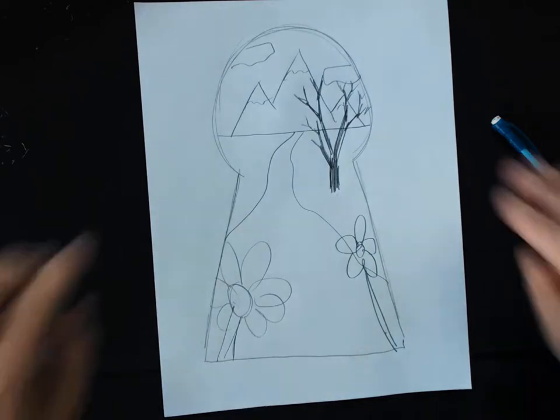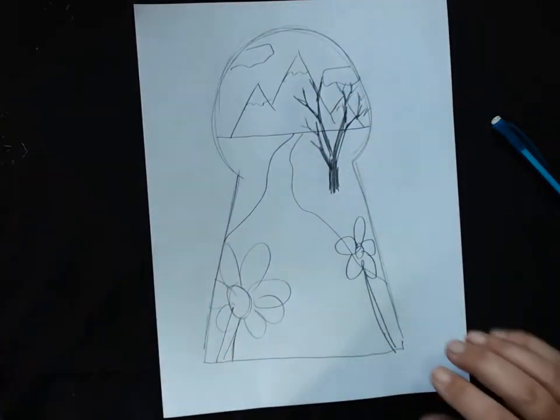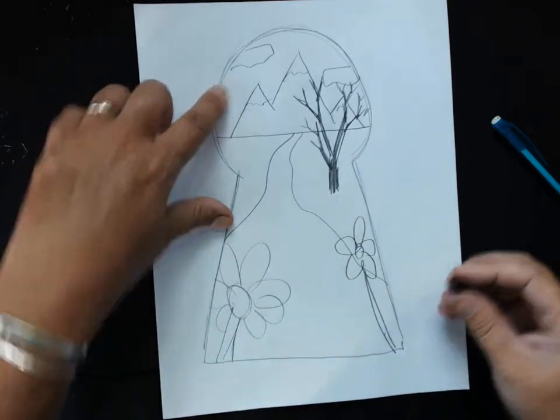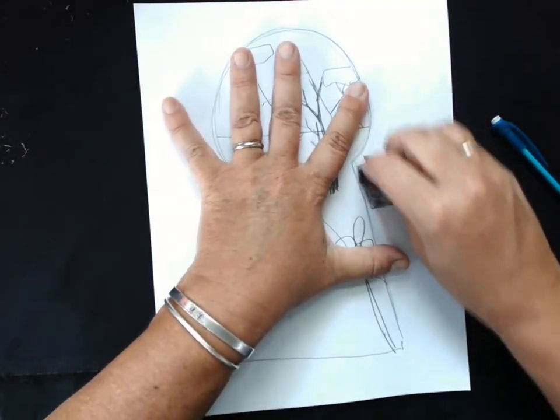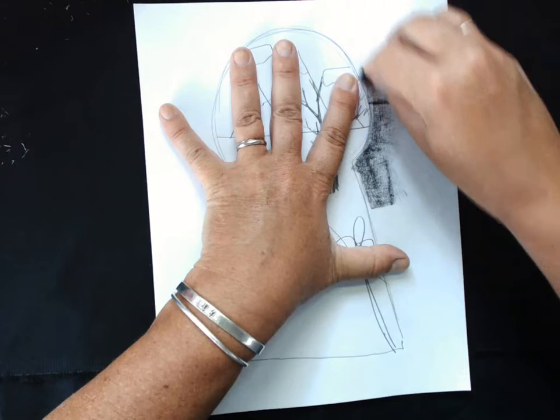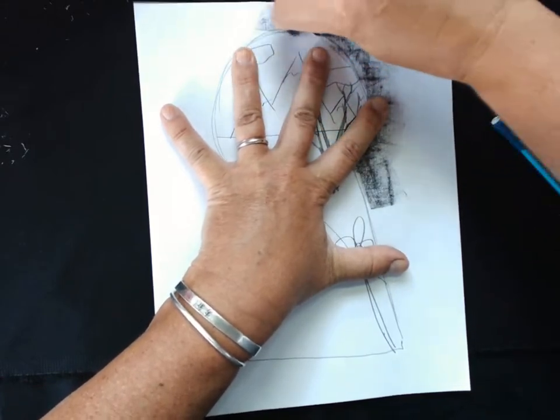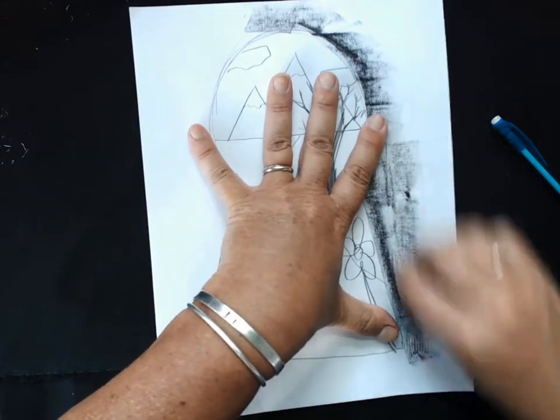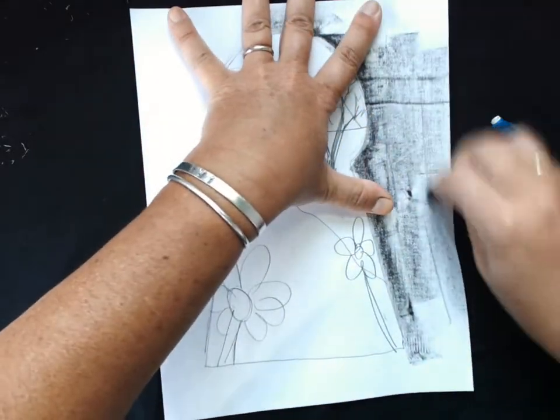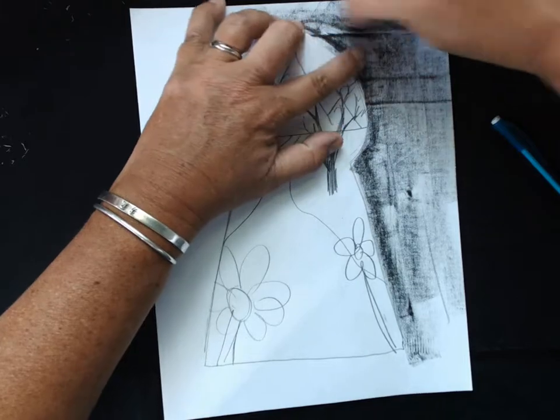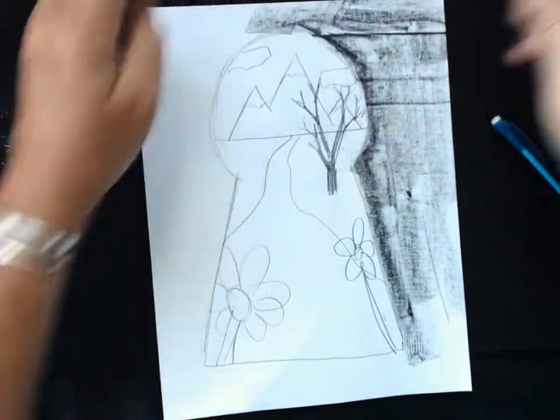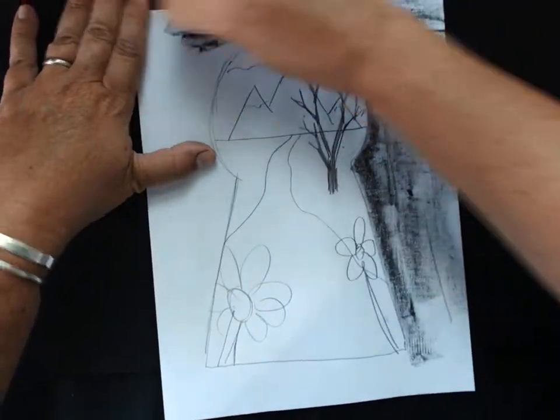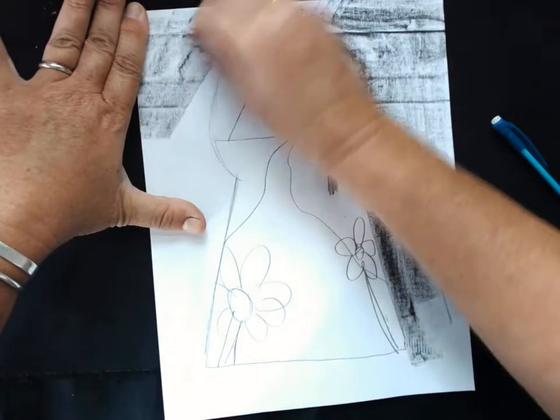You're going to choose a neutral color to color around your keyhole. So I'm just going to take my black crayon here and color in everything around. You can color it with marker, you can use a brown, a gray, black.